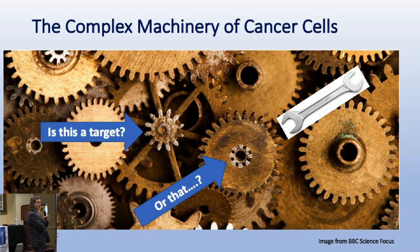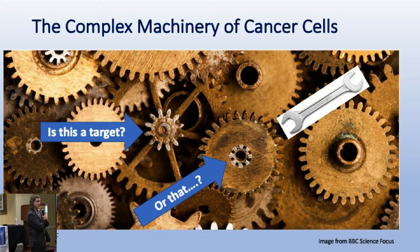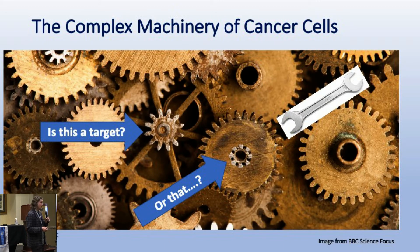Cancers are really complicated. As my mentor told me on my first day in oncology clinic: cancers are smarter than most oncologists. That may still be true for many cancers, but the gap is really closing. It's like an elaborate clockwork - one cog could be the target, or maybe we're doing something non-specific, just throwing a wrench in and hoping it will stop. And that's what some targeted therapy actually does.